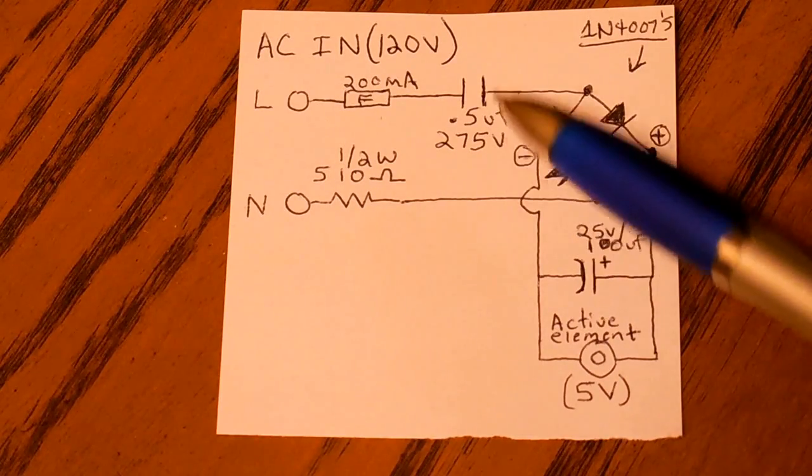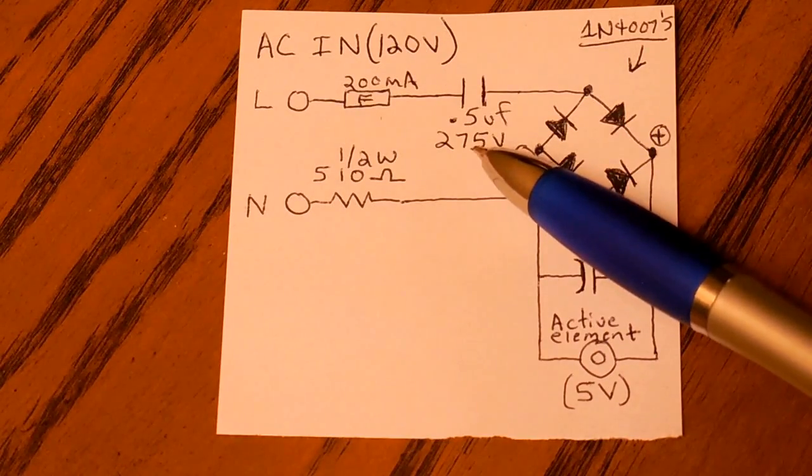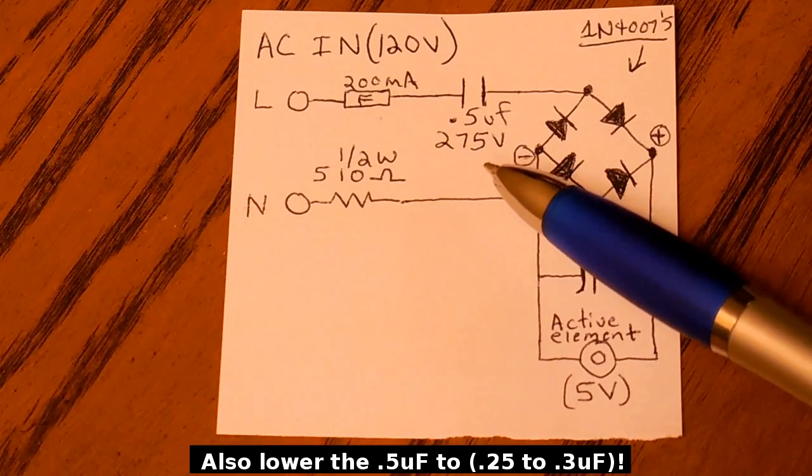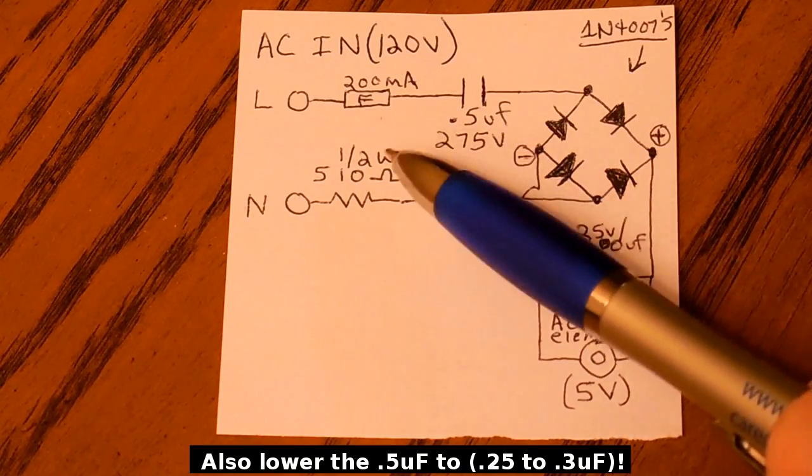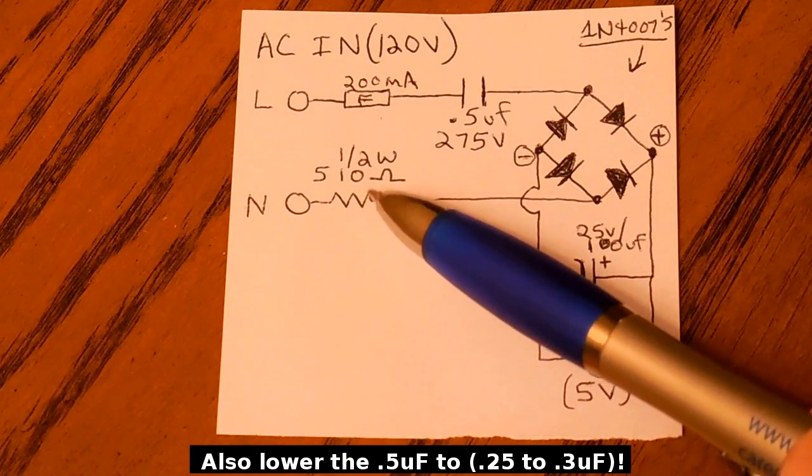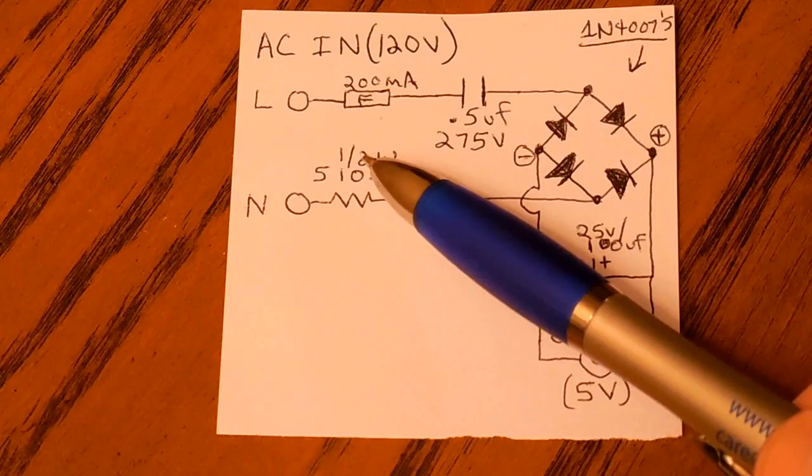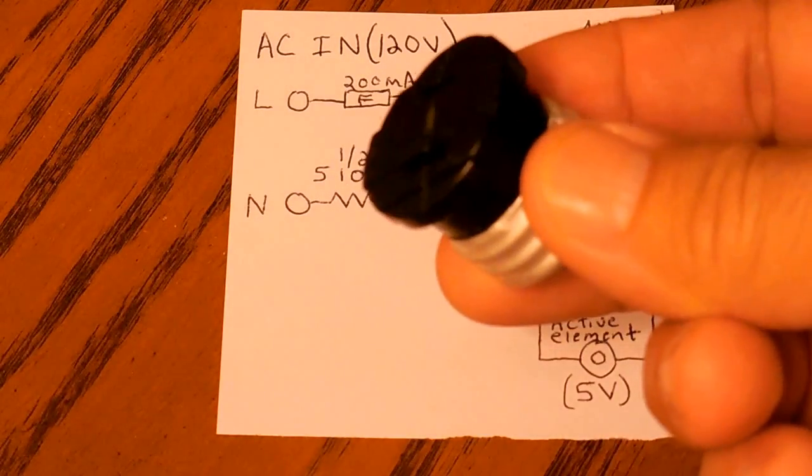If you're going to be using this for a 240 volt circuit, make sure you use a 400 volt rated capacitor to 600 volt rated capacitor. Do not use anything less than 400, and you're going to want to take this resistor here, the 510 ohm, and increase that to 1 watt. Once those changes are made, the circuit will work fine if you're using a European-style socket.